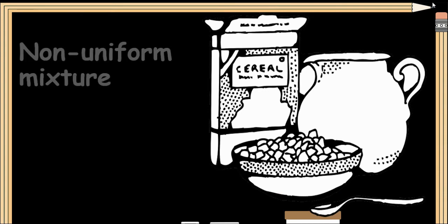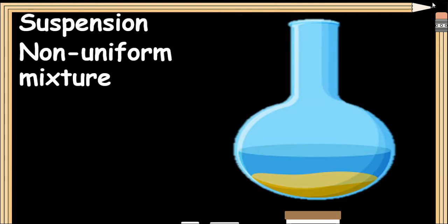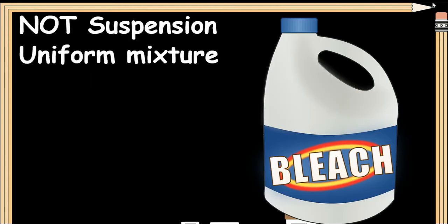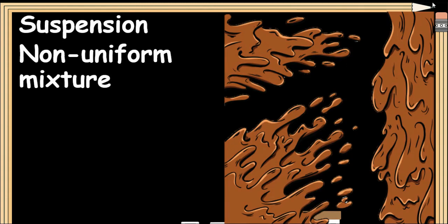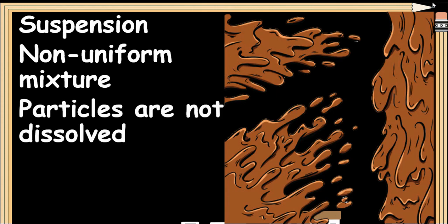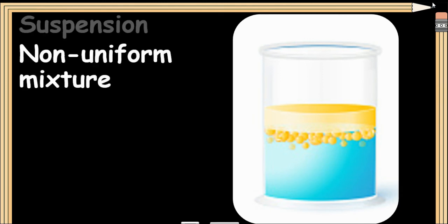Cereal is an example of suspension — it is a non-uniform mixture and can be seen by the naked eye. Sand in water is a suspension: non-uniform mixture with particles that settle at the bottom. Bleach is not a suspension; it is a uniform mixture where particles are uniformly dissolved. Muddy water is a suspension: non-uniform mixture where particles are not dissolved. Oil and water is a suspension: non-uniform mixture with particles visible to the naked eye.